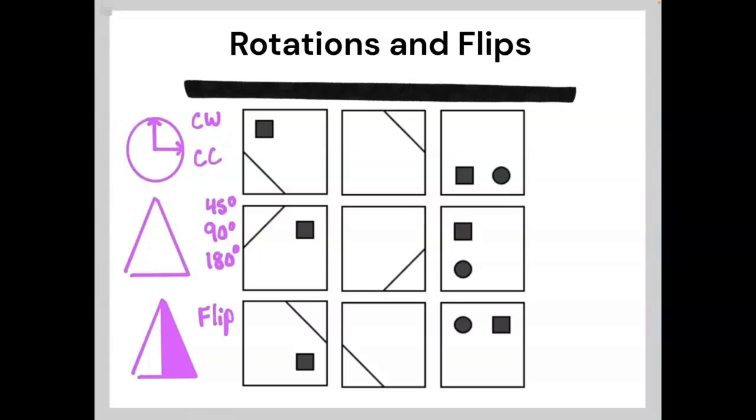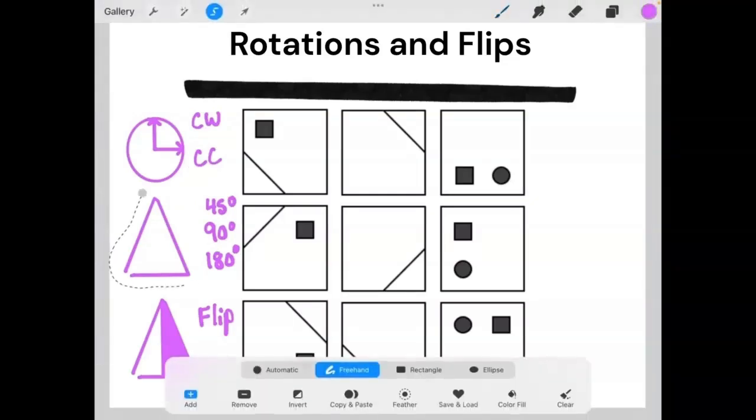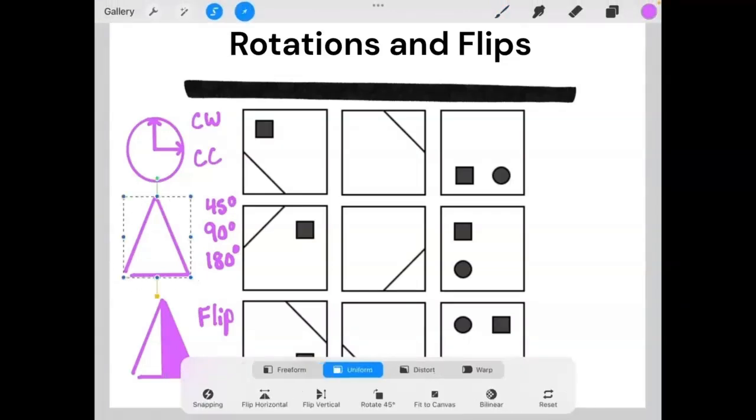Rotations can also be done in different degrees. If I were to take this triangle, the three most common rotations are 45 degrees, which looks like this, 90 degrees, which would look like this, and 180 degrees, which would look like this.